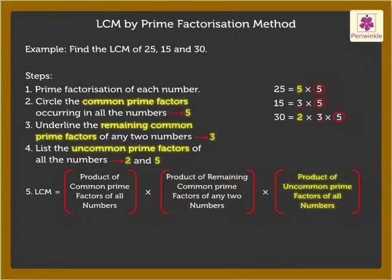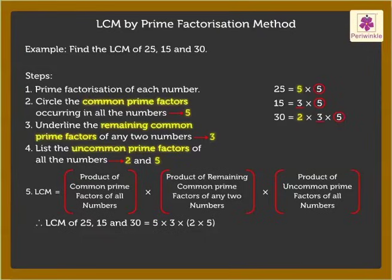and the Uncommon Prime Factors of all the numbers. Thus, the L.C.M. of 25, 15, and 30 is equal to 5 into 3 into 2 into 5, which is equal to 150.